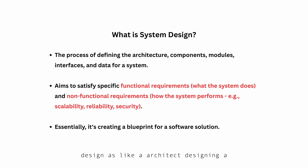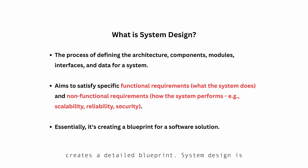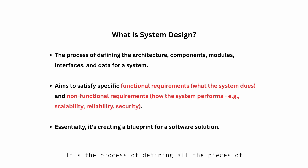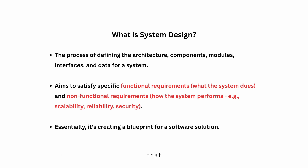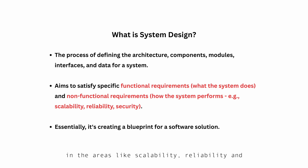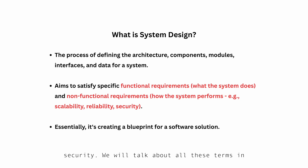Think of system design like an architect designing a skyscraper. Before any construction begins, the architect creates a detailed blueprint. System design is that blueprinting phase for software. It's the process of defining all the pieces of the system — its architectures, its different components or modules, how they will interact through interfaces, and how the data will be managed. The ultimate goal is to create a system that meets functional requirements and also performs well in areas like scalability, reliability, and security — those are called non-functional requirements.